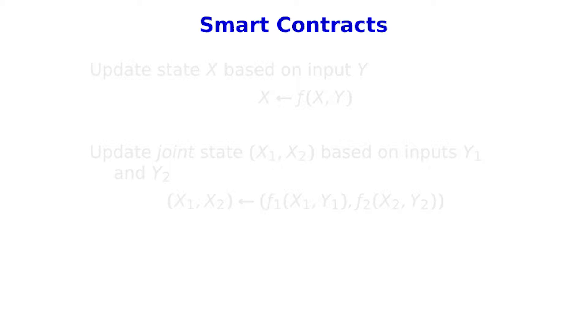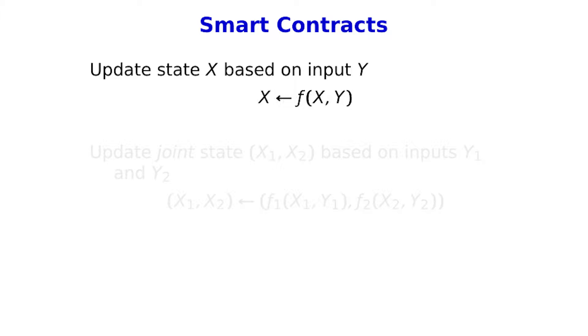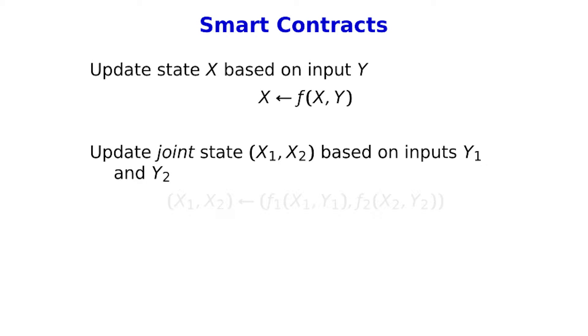I want to start by talking about smart contracts. One way to think about a smart contract is that you've got some state information that is going to evolve over time — maybe implicitly represented. Then you've got an input Y, and you want to update your state. Think about it as just taking the current state X, an input Y, applying some transformation function F, and then you have a new state X. In a blockchain, Y would get recorded in the blockchain, and then anybody evaluating this thing would be able to update X as you go along.